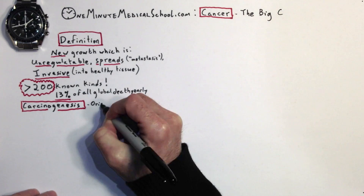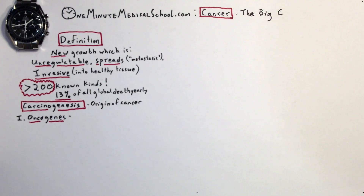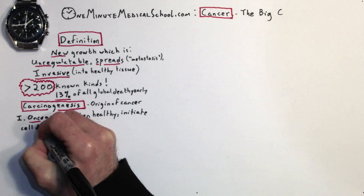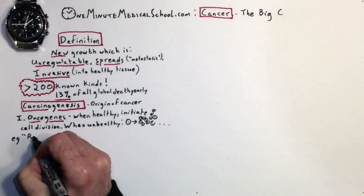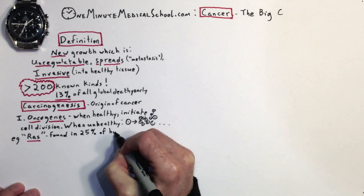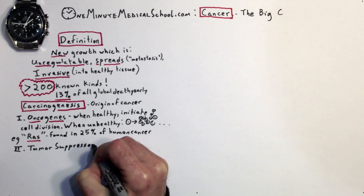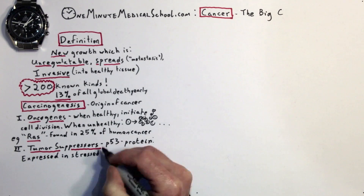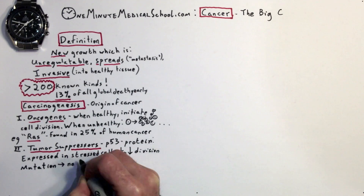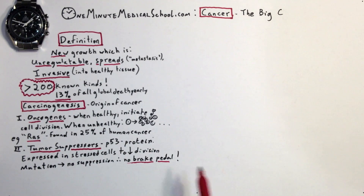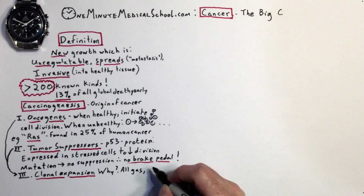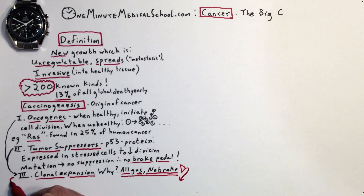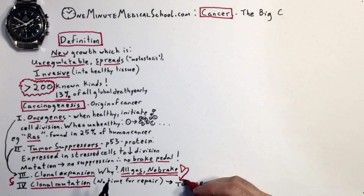Carcinogenesis, the origin of cancer, begins with oncogenes, which cause rapid proliferation of cells. Then the failure of tumor suppressors, which are proteins that stop multiplication in damaged cells. These clones then expand and become mutated, because there's no time to repair the damage.